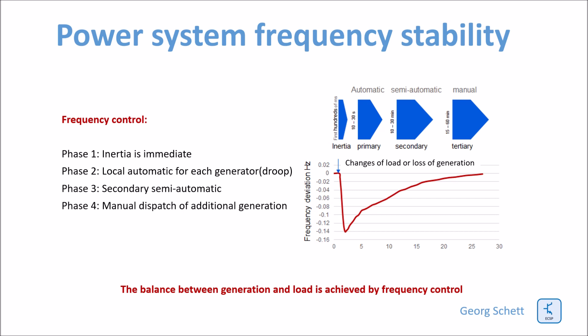Or if the generation exceeds the load, the energy produced is stored in the rotating masses. That means the rotation speed is accelerating. The frequency goes up.